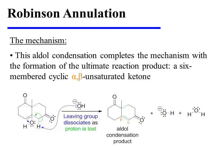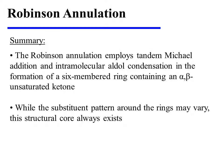The process finishes with the formation of a six-membered cyclic alpha-beta unsaturated ketone. In summary, the Robinson annulation employs tandem Michael addition and intramolecular aldol condensation in the formation of a six-membered ring containing an alpha-beta unsaturated ketone. While the substituent pattern around the rings may vary, this structural core always exists.